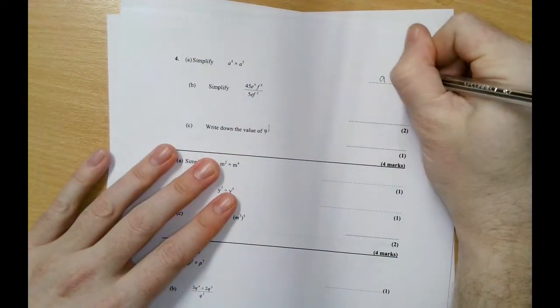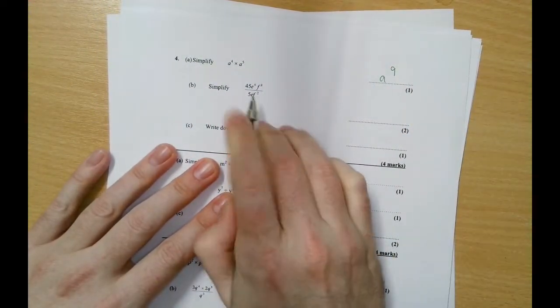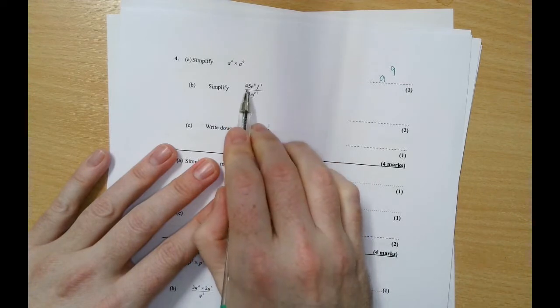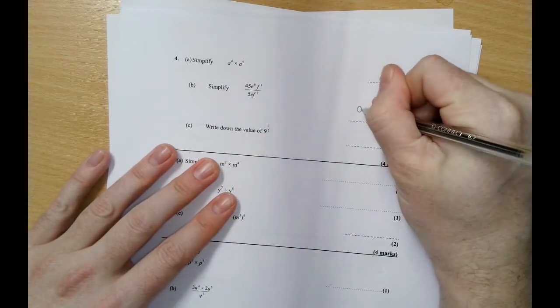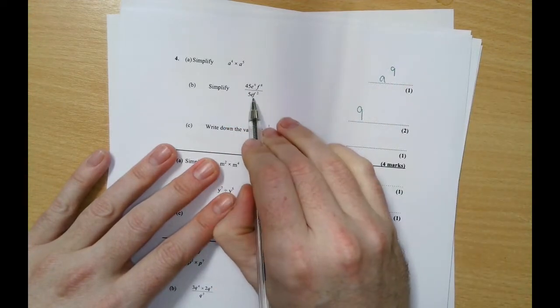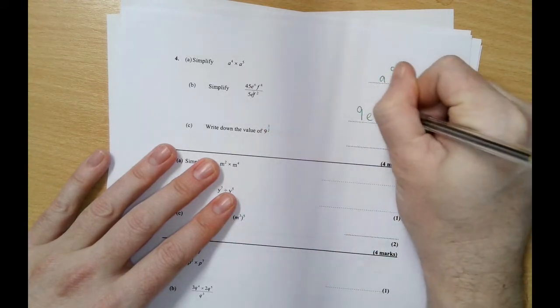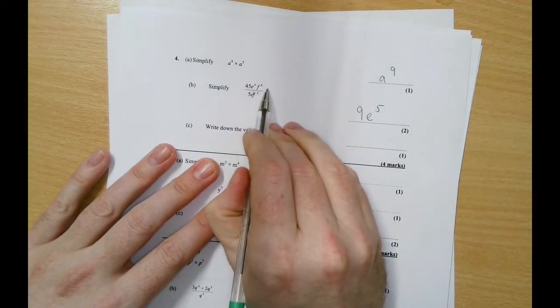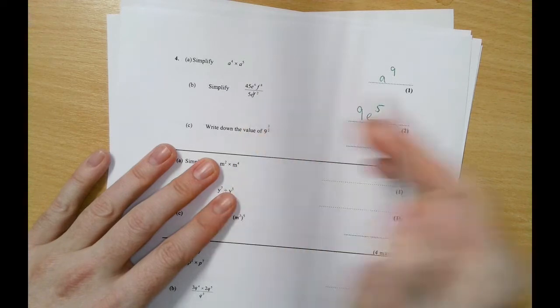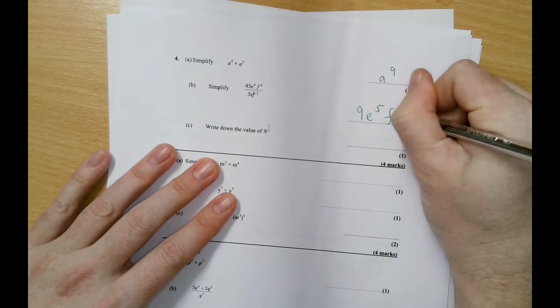Next one, 8 to the power of 4 times 8 to the power of 5 is a to the power of 9. Next one, numbers deal with numbers, 45 divided by 5 is 9. e to the power of 6 divided by e, that's really e to the power of 1, so that would be e to the power of 5 in the answer. And then f to the power of 8 divided by f squared would be f to the power of 6.